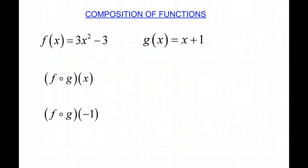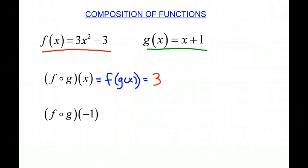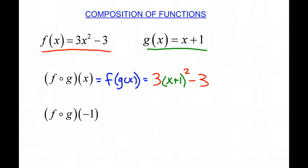Looking at another example, we have f of x equals 3x squared minus 3, and g of x equals x plus 1. Here's our f of x and here's our g of x. So again, we're taking the composition of those, f of g of x. Whenever we see our f, we're going to put our g of x into it. So when we write that out, we have 3 times, then what is our g of x? It is x plus 1, and then that is squared minus 3. So we've written f of g of x.